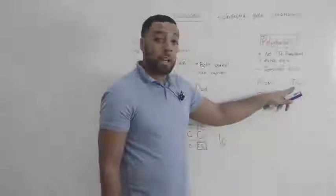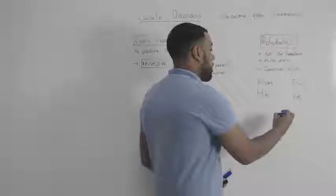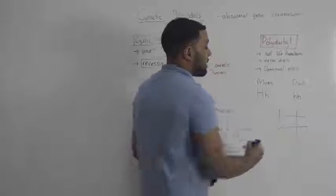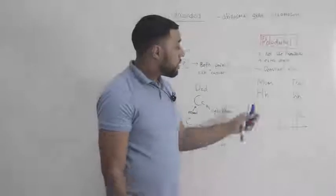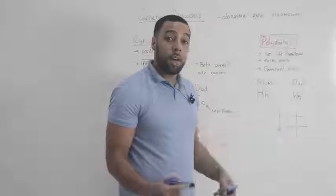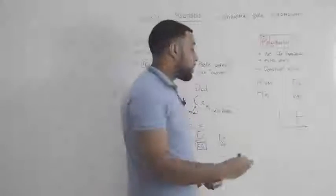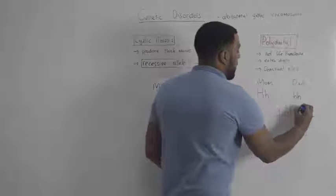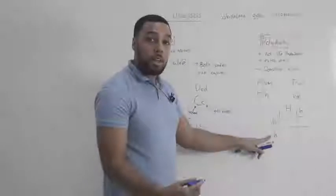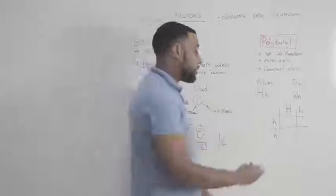But when mom and dad reproduce, again, we can draw a genetic diagram to work out the probability of their child having polydactyl. I'll put the mother's alleles at the top and the father's alleles at the side, and we can fill in our genetic diagram.